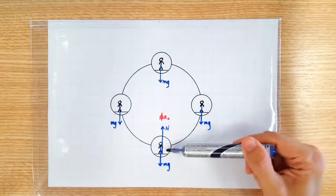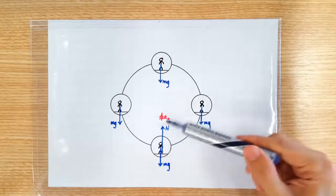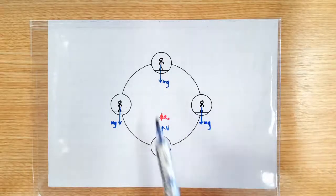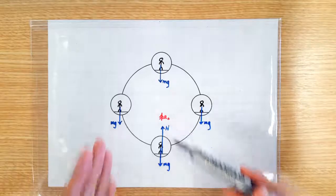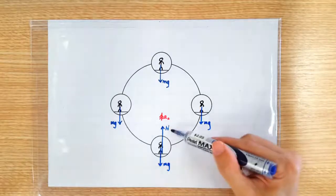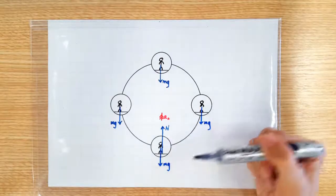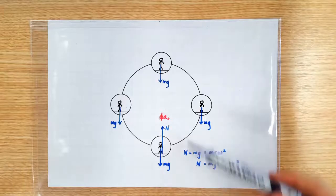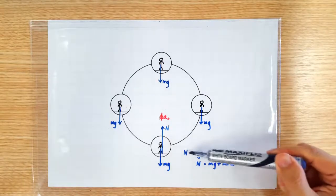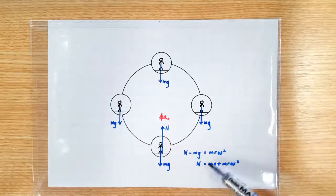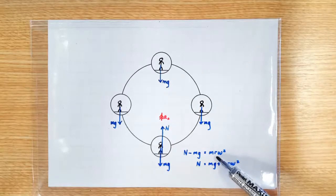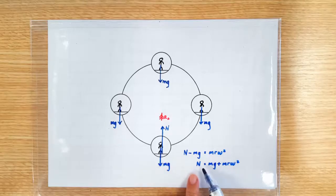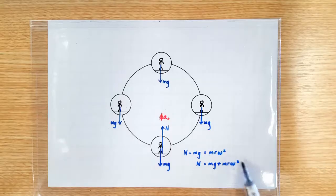When the man is at the bottom of the ride, the centripetal direction is upward, which means the net force must be upward. So the normal contact force has got to be larger than the weight. We can write: the upward normal contact force minus the downward weight equals the net force, which is the centripetal force, mRω². So the normal contact force is larger than the weight by this amount, which is the required centripetal force.